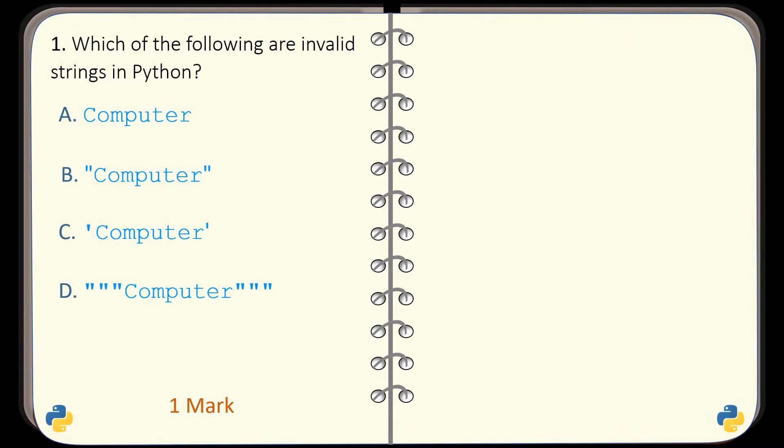Here is question number 1. Identify the invalid string from the ones given here. The invalid string is given in option A. A string must be delimited by a pair of quotation marks. In option A, it is not delimited by a pair of quotation marks, so it is an invalid string.